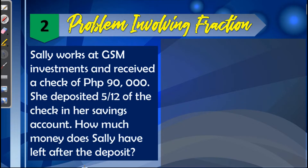Problem number two: Sally works at GSM Investments and receives a check of 90,000 pesos. She deposited five-twelfths of the check in her savings account. How much money does Sally have left after the deposit? The first thing we need to find is the amount Sally deposited. Since we are given 90,000 and the fractional value of five-twelfths, we multiply 90,000 by five-twelfths.